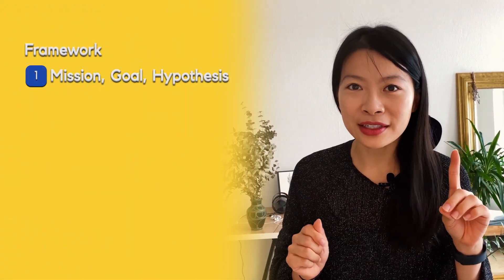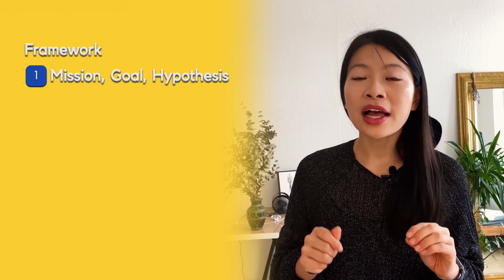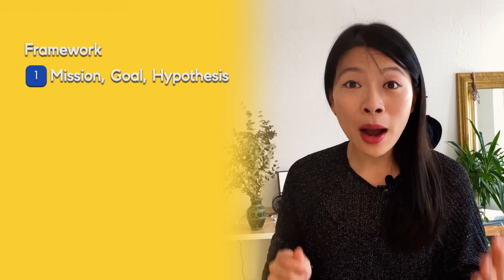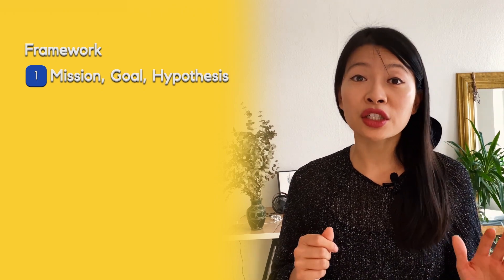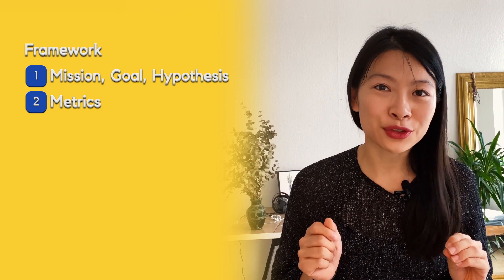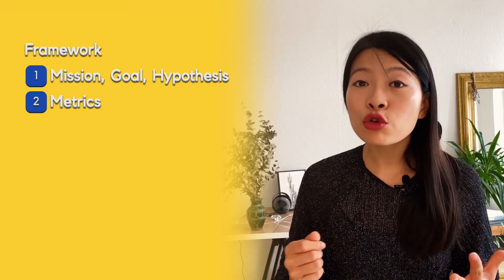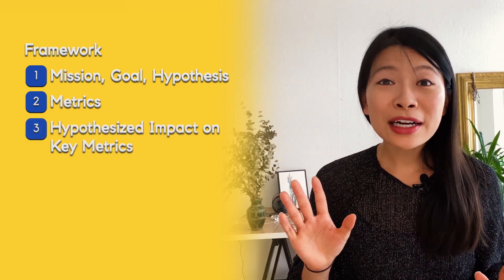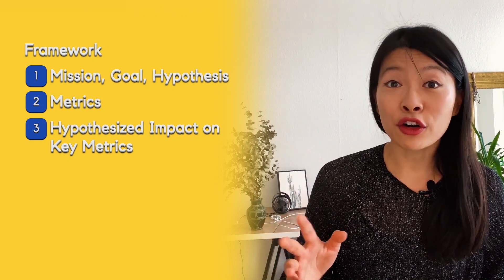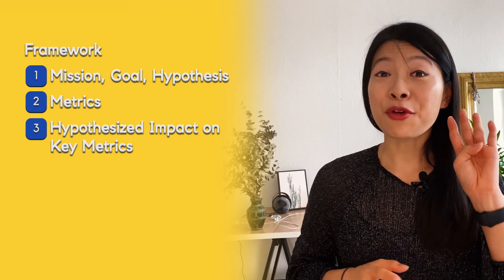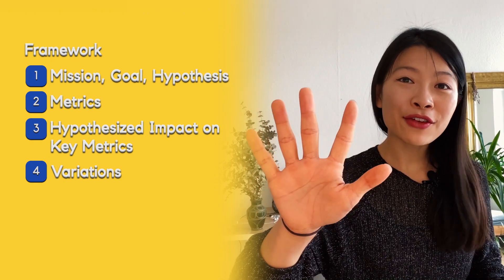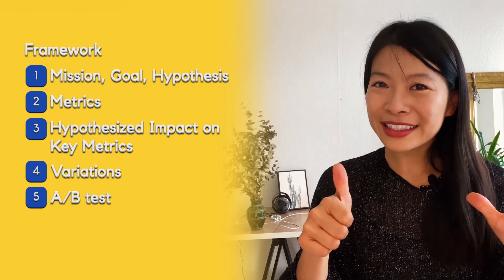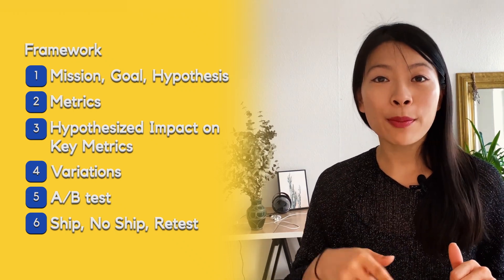It's a six-part step starting with: first, the mission, the goal, and the hypothesis of the feature we're talking about — here you want to talk about how the goal of the product is interconnected with the mission of the company and share the hypothesis of why we're considering these options. Second, share some success metrics. Third, talk about the hypothesized impact that X versus Y will have on your metrics. Fourth, talk about other options you might consider testing. Fifth, design your A/B test. And sixth, analyze the metrics to come up with a ship, no-ship, or retest decision.